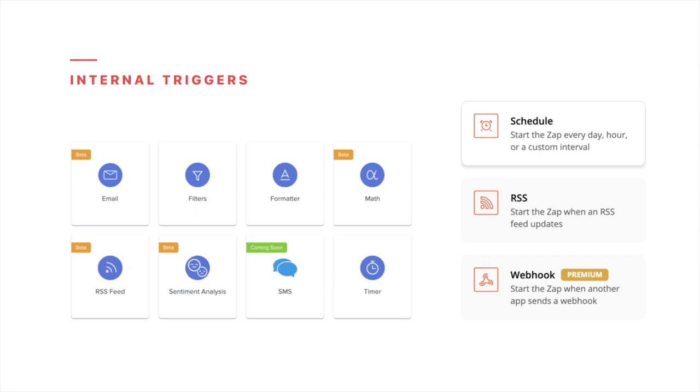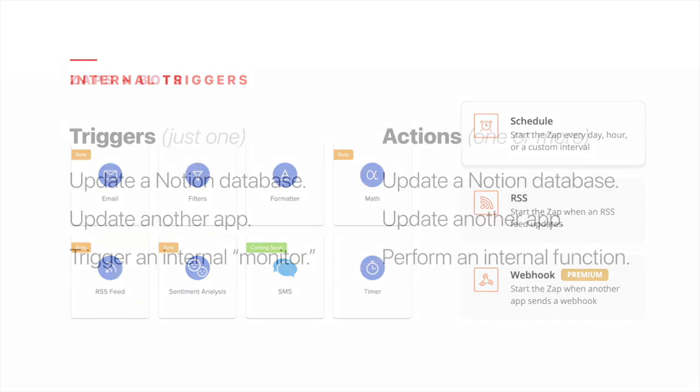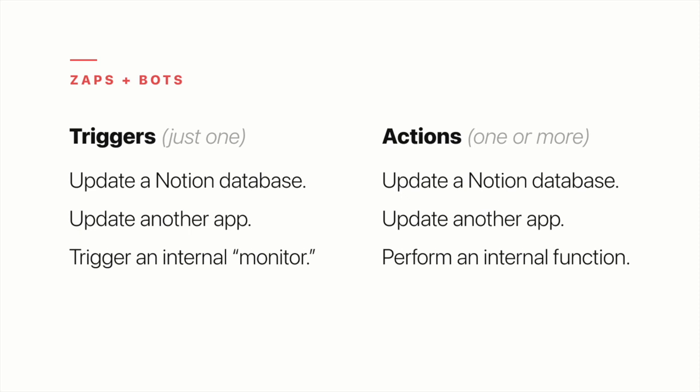For example, you can trigger your zap on the first day of each month, or whenever a provided email address receives an email containing a new task, that task can be added to a tasks database. So we can trigger zaps and bots within Notion, within other apps, and through these internal monitors. Those triggers initialize one or more actions which, like triggers, can occur within Notion, within other apps, or within internal functions of Zapier and Automate.io.